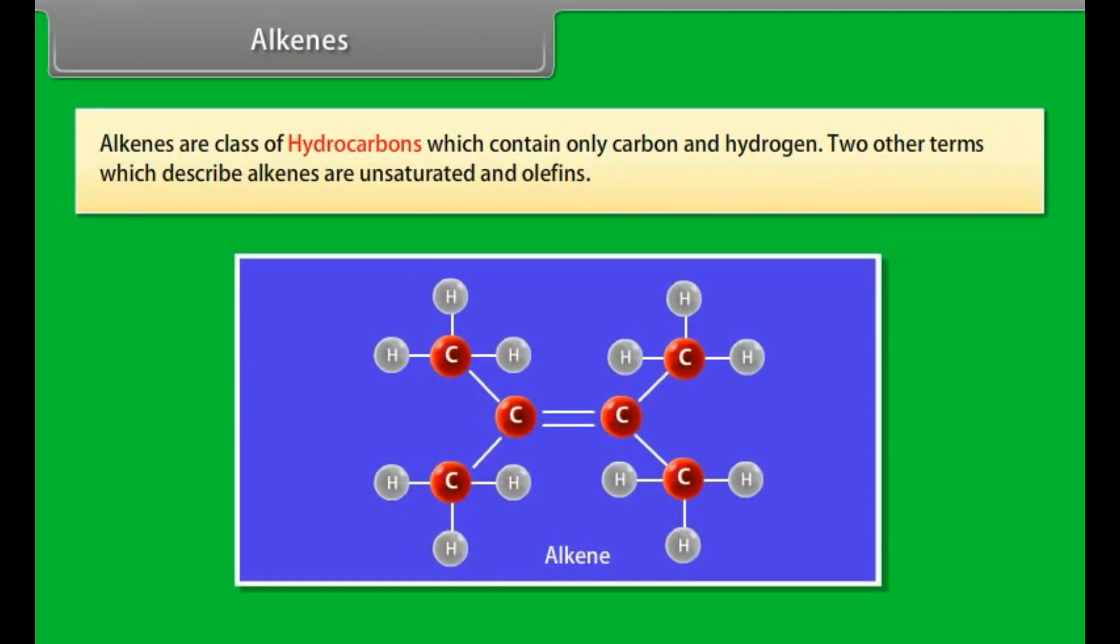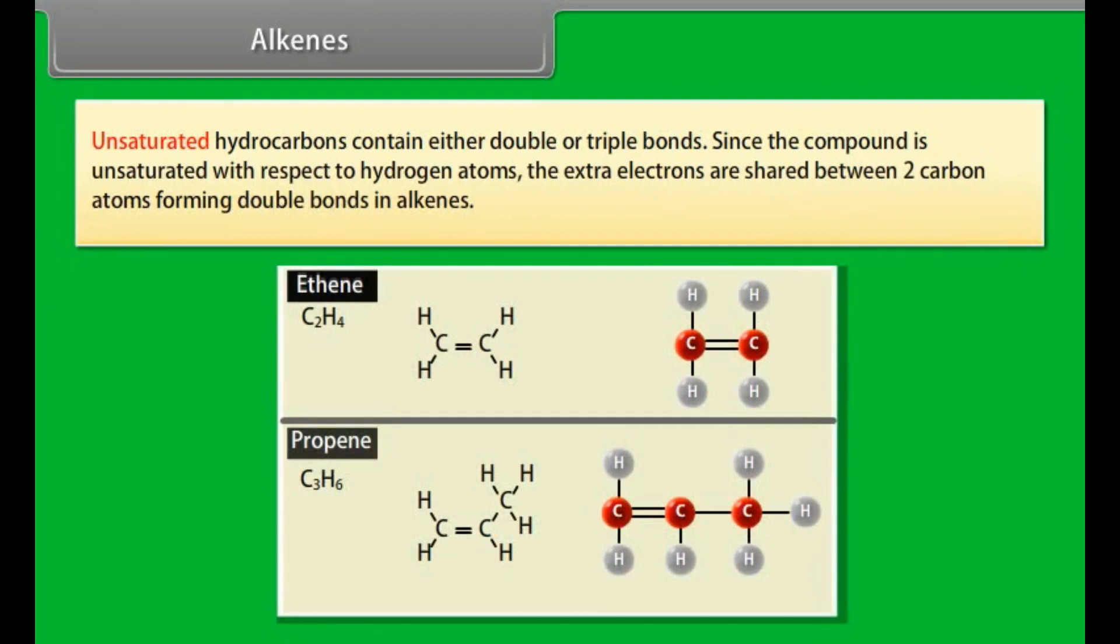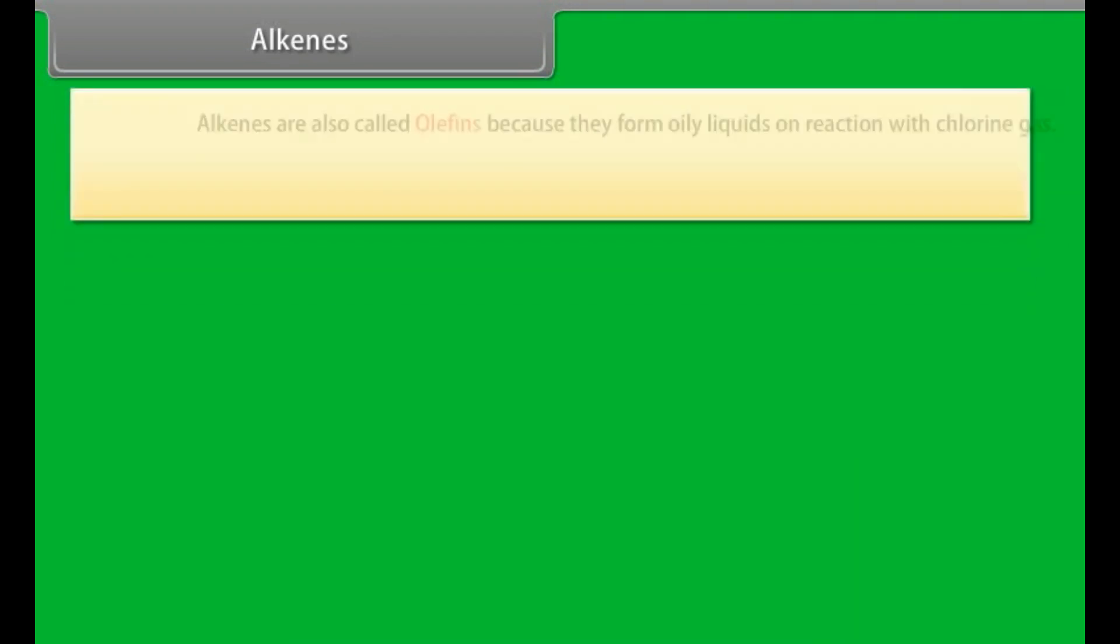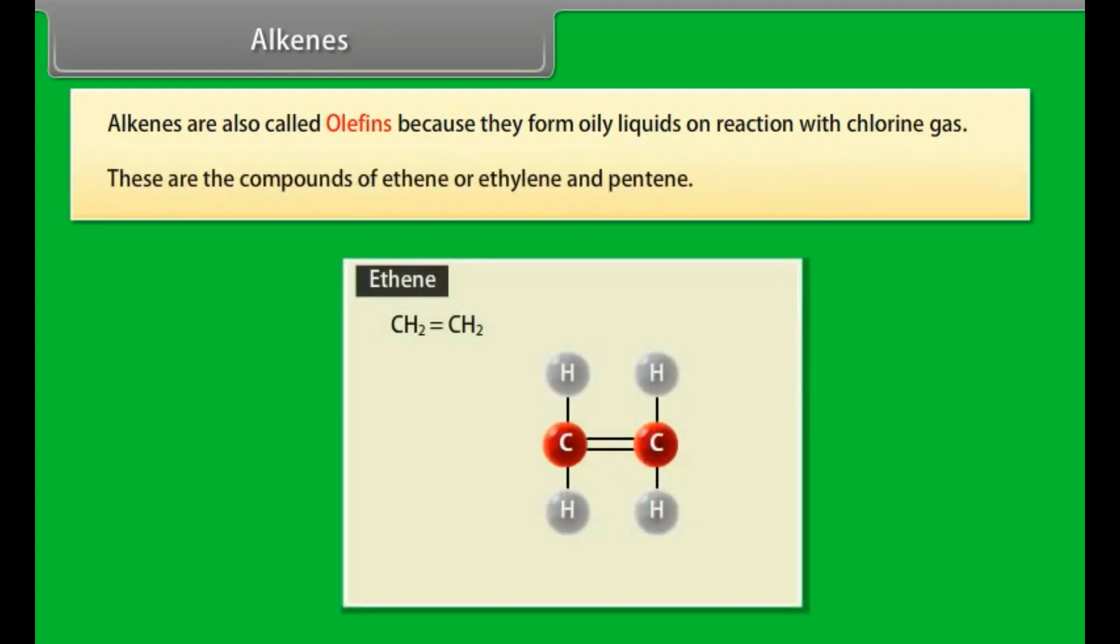Alkenes are class of hydrocarbons which contain only carbon and hydrogen. Two other terms which describe alkenes are unsaturated and olefins. Unsaturated hydrocarbons contain either double or triple bonds since the compound is unsaturated with respect to hydrogen atoms. The extra electrons are shared between two carbon atoms forming double bonds in alkenes. Alkenes are also called olefins because they form oily liquids on reaction with chlorine gas. These are the compounds of ethene or ethylene and pentene.